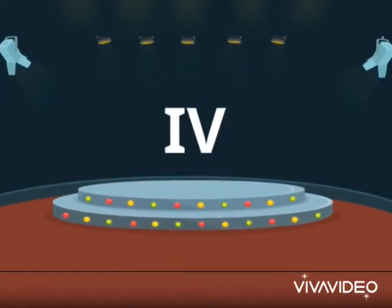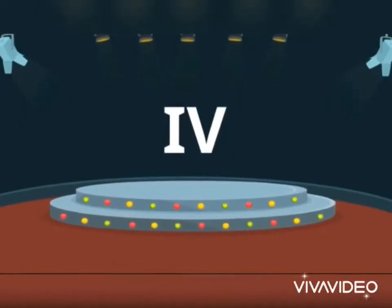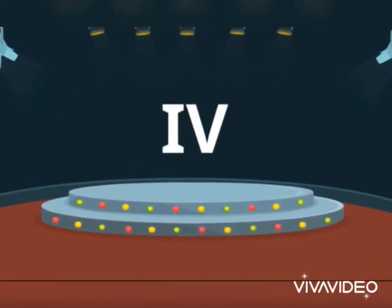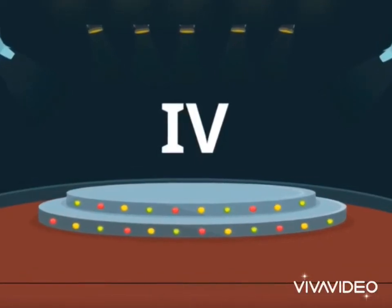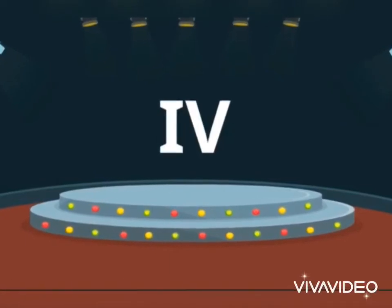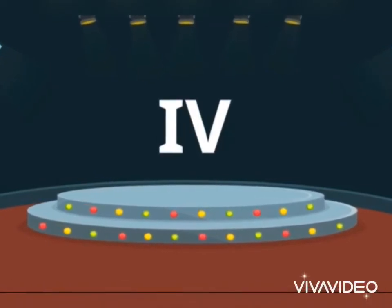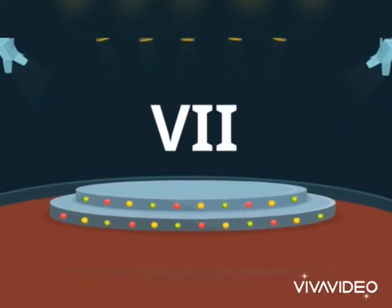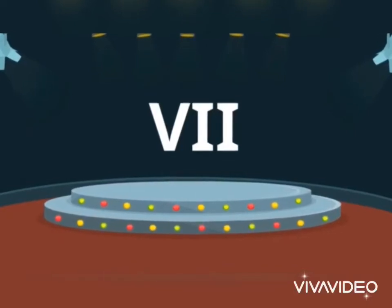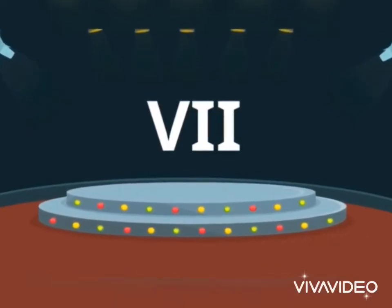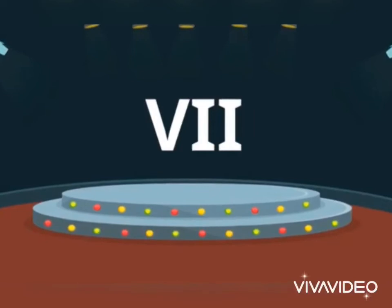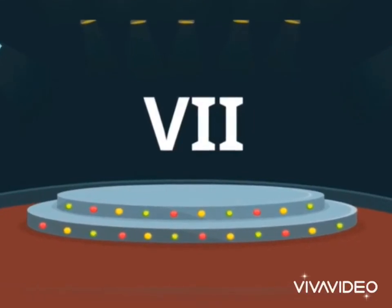Next, IV — here the smaller number is before the bigger, so 5 minus 1 is equal to 4. Here the smaller number is after the bigger, so VII — V, I, I — is equal to 5 plus 1 plus 1 plus 1, which is 7.